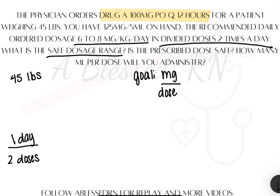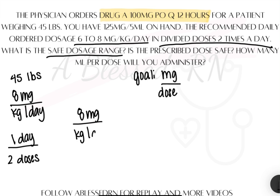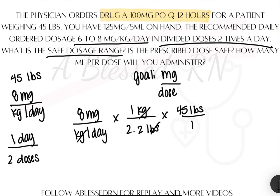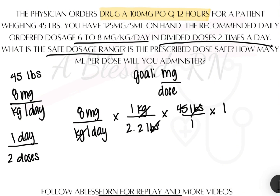We're going to do the exact same steps with the upper limit, which is 8 milligrams per kilogram per day. We'll start with 8 milligrams over kg per day. We'll cross out our kgs — 1 kilogram equals 2.2 pounds — and put 45 pounds over 1. Cross out pounds, and the last step is to get rid of day at the bottom: 1 day equals 2 doses. Multiply across the top, multiply across the bottom, and we get 81.8 milligrams per dose.